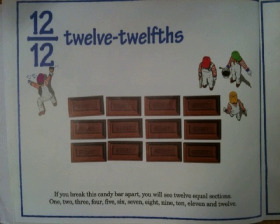Twelve twelfths. If you break this candy bar apart, you will see twelve equal sections: one, two, three, four, five, six, seven, eight, nine, ten, eleven, and twelve.